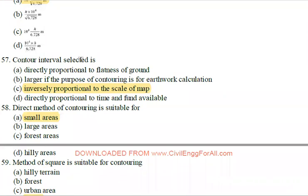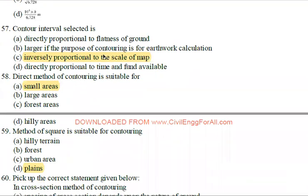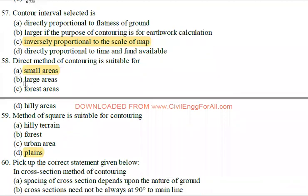Next: Contour interval selected is inversely proportional to the scale of the map. The direct method of contouring is suitable for small areas. The method of squares is suitable for contouring plain areas.